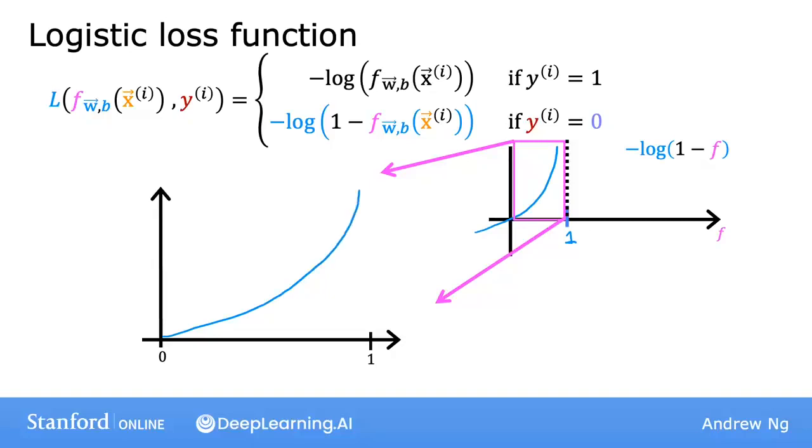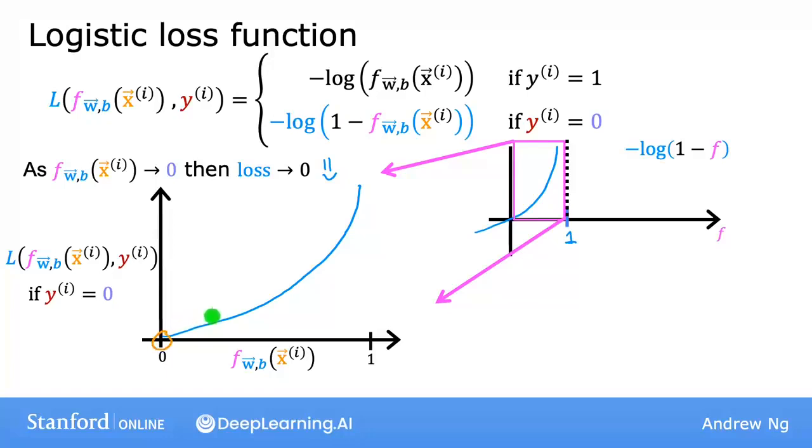So in this plot, corresponding to y equals 0, the vertical axis shows the value of the loss for different values of f of x. So when f is 0 or very close to 0, the loss is also going to be very small, which means that if the true label is 0 and the model's prediction is very close to 0, well, you nearly got it right. So the loss is appropriately very close to 0. And the larger the value of f of x gets, the bigger the loss because the prediction is further from the true label 0. And in fact, as that prediction approaches 1, the loss actually approaches infinity.